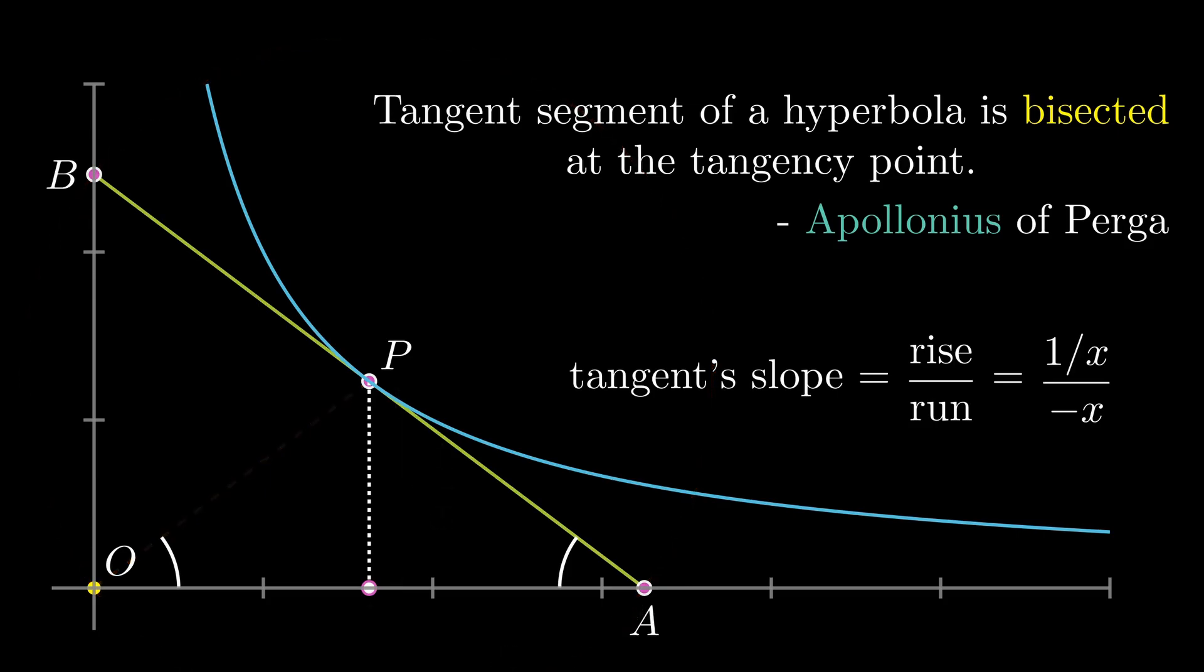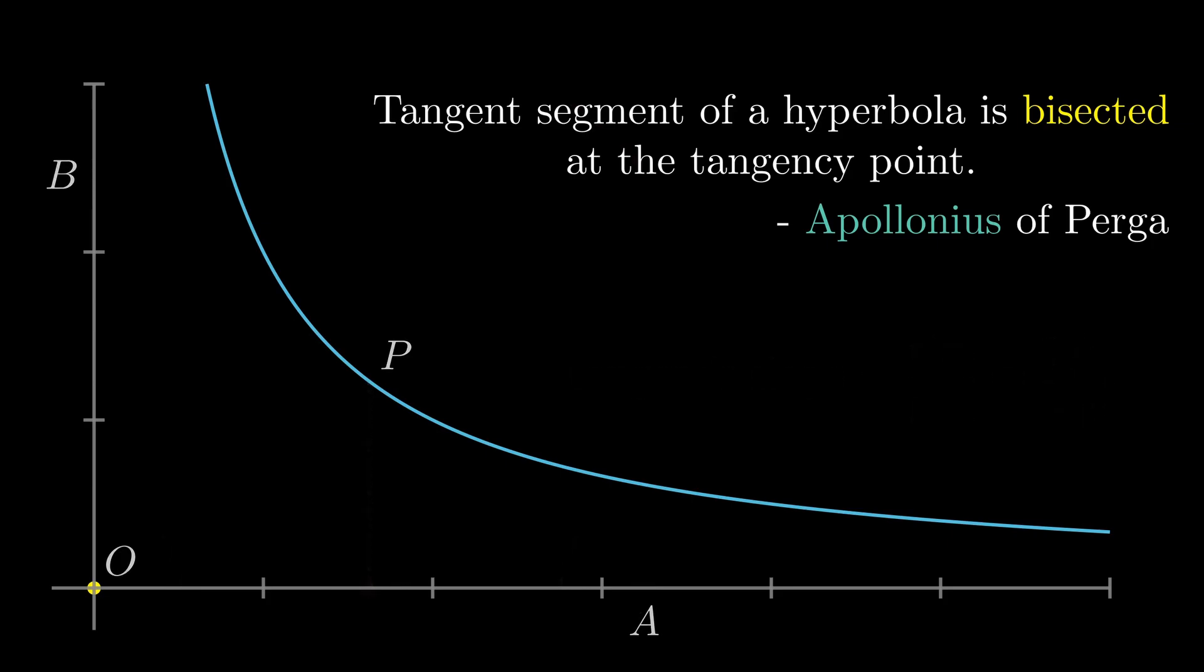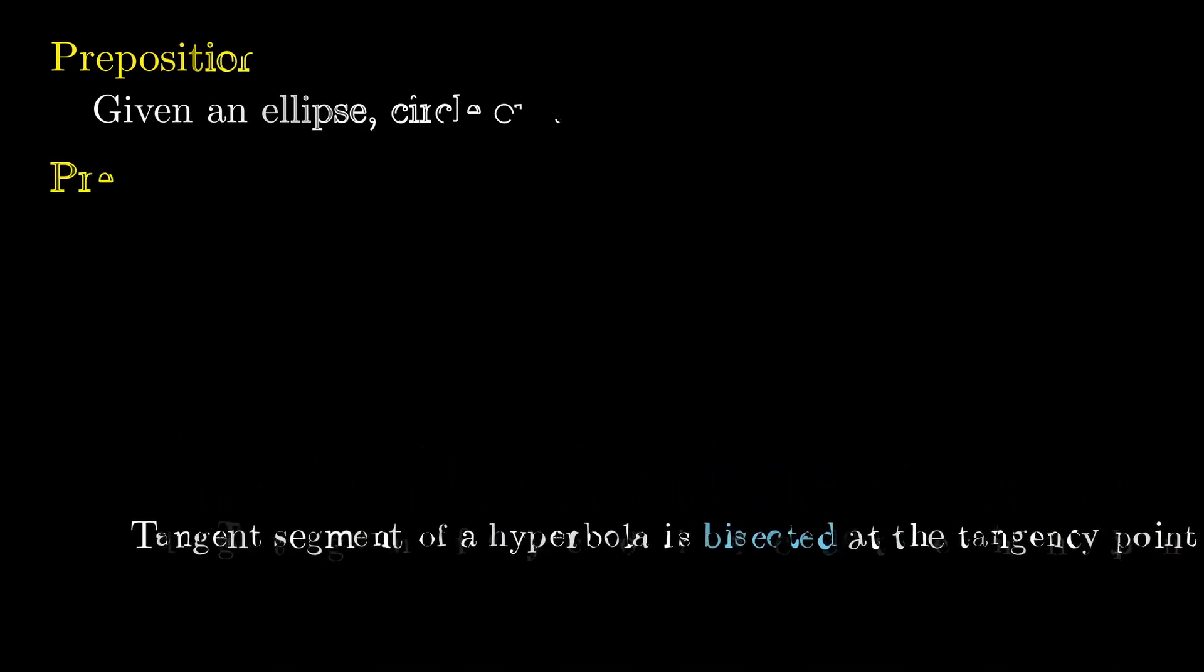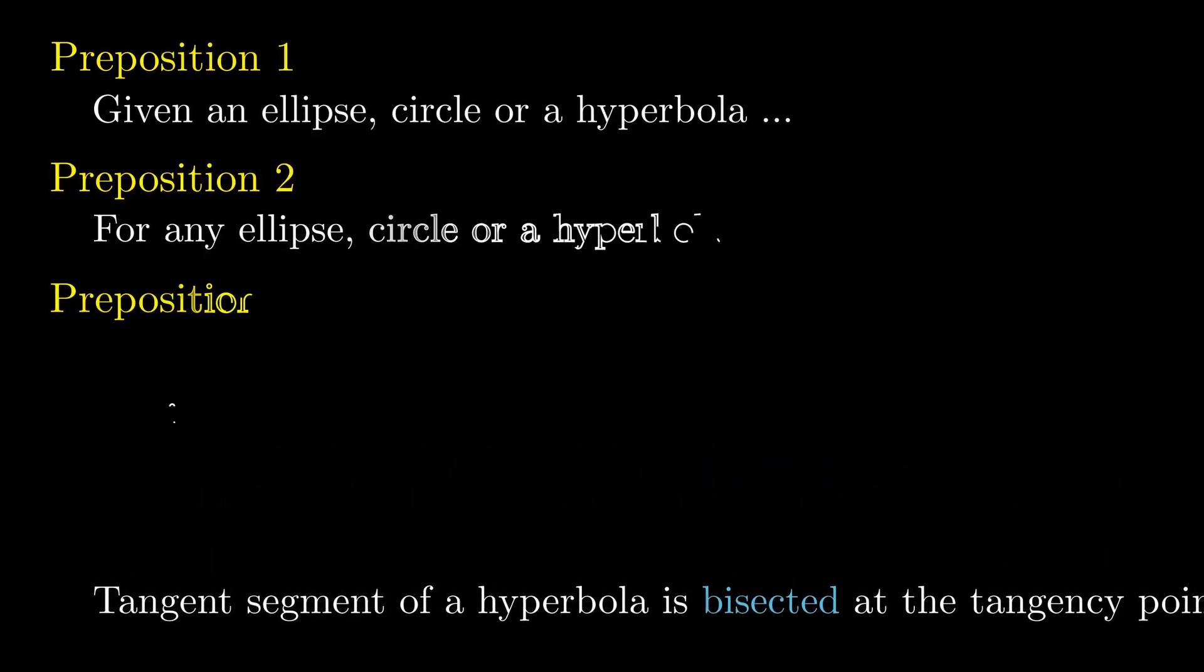But we may be wondering how Apollonius knew the tangent segment is bisected at the tangency point. Because he was writing a general treatise on all conics, he proves this through a series of propositions to arrive at this result. But we confine ourselves only to the hyperbola. And let's see how we can prove this more directly.